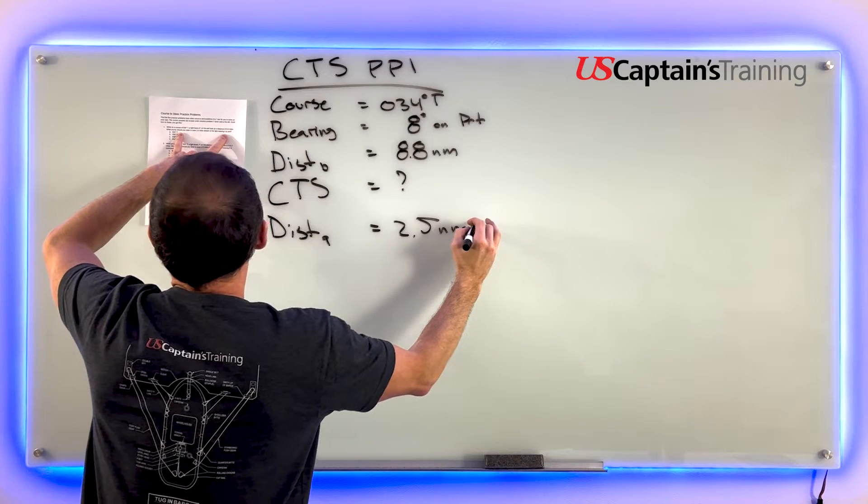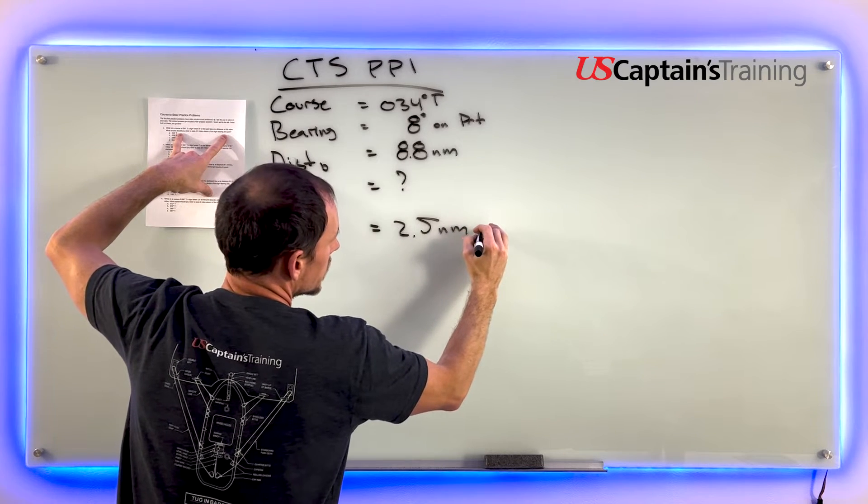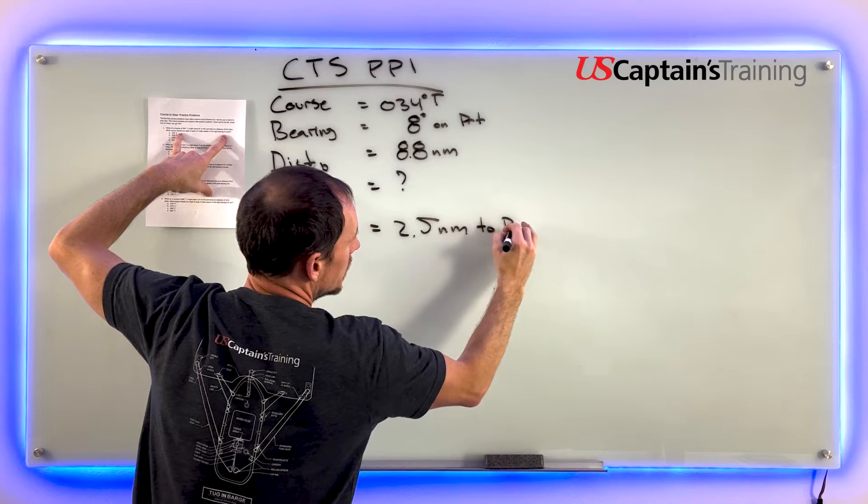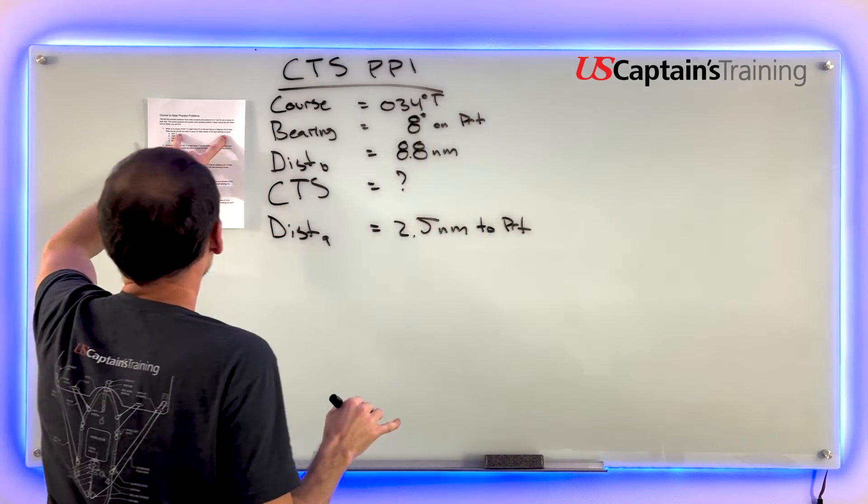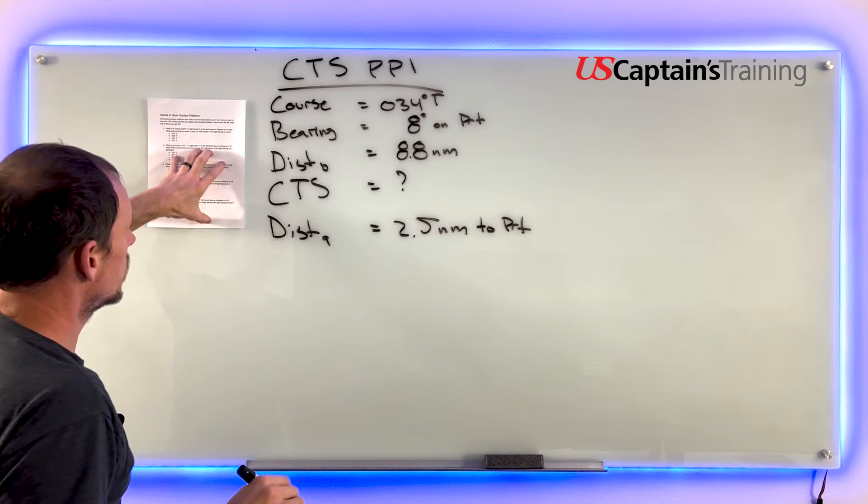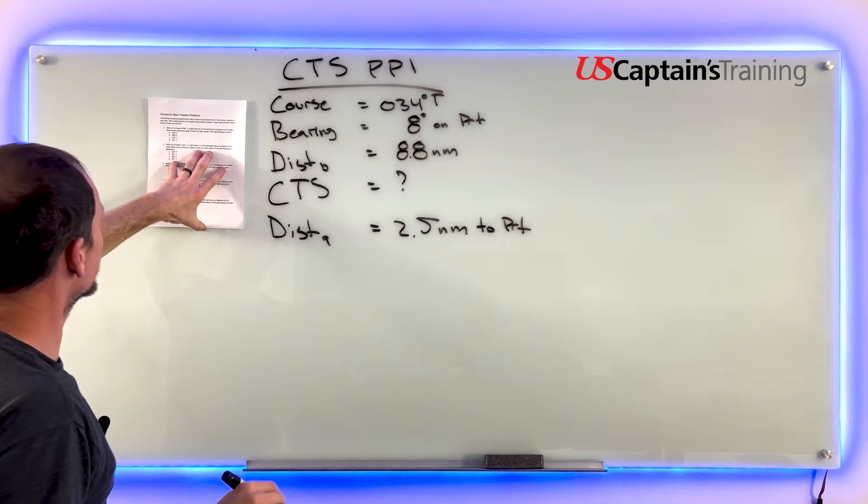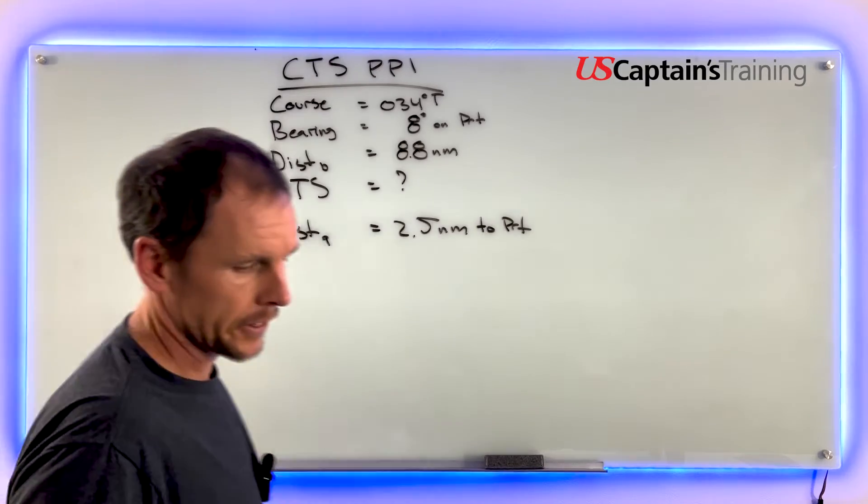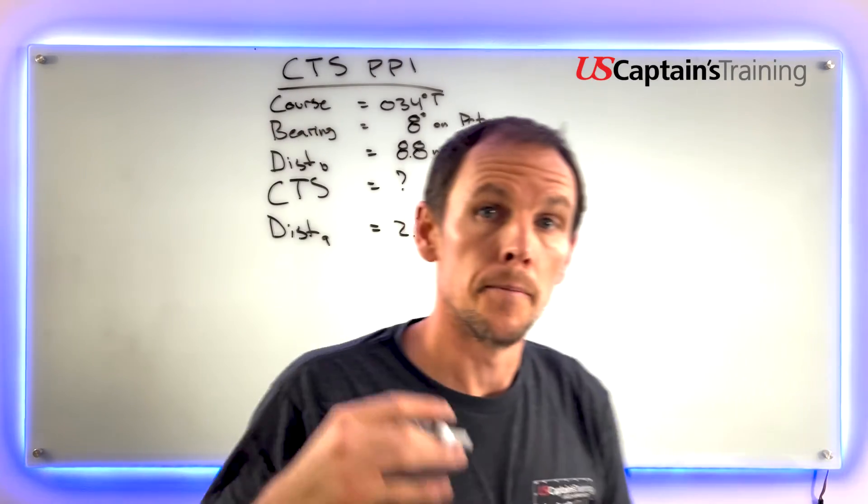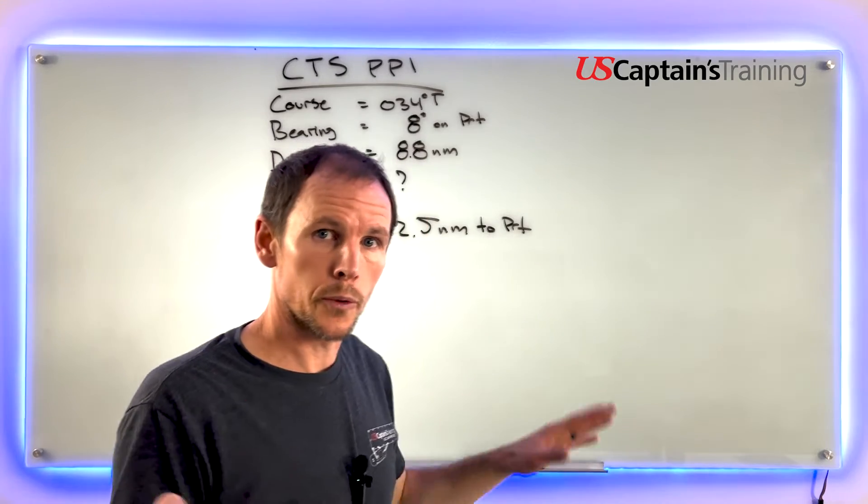And it says leaving it to port. These are important details. We got everything. Now we're going to make a triangle so that we can get the last piece of information we need to solve this.